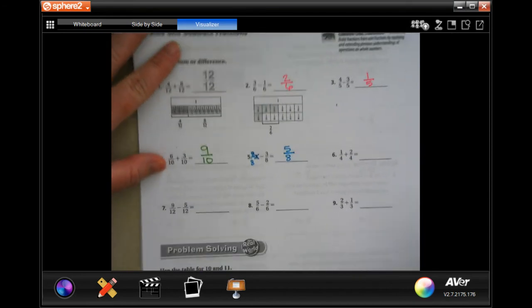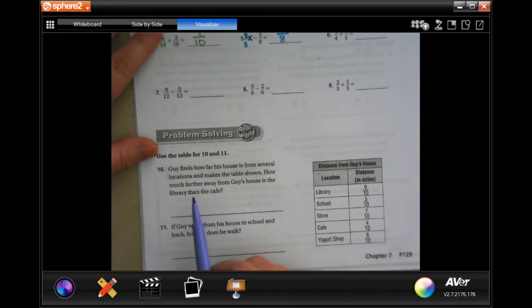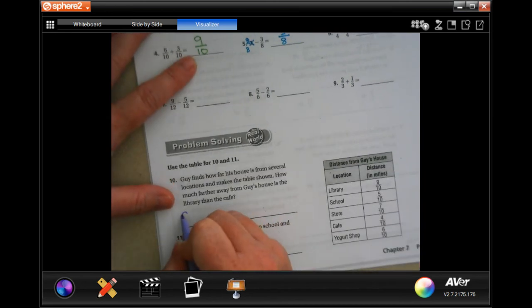All right, y'all can do through number nine. We're going to go down and do number ten. Guy finds how far his house is from several locations and makes the table shown. How much farther away from Guy's house is the library than the cafe? Well, library is nine tenths and cafe is four tenths, so nine tenths minus four tenths.